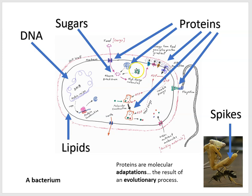Proteins are the result of an evolutionary process, and they are related to DNA — it's DNA that stores the recipes to build each and every protein. Since DNA can change over time through mutations, the recipe to build proteins can change, which means cells can change over time and living things can evolve.